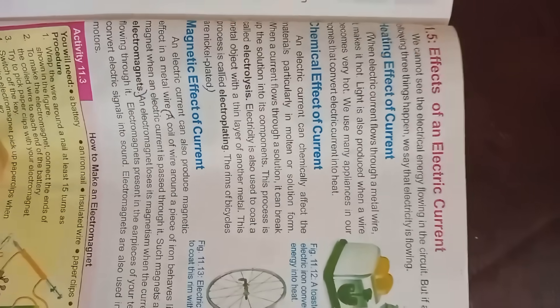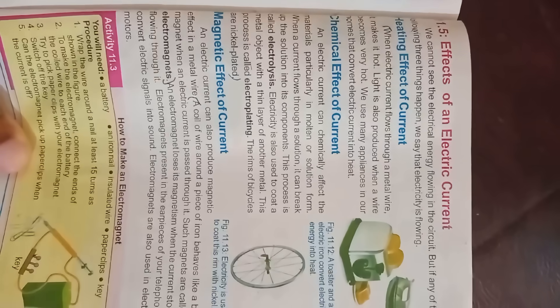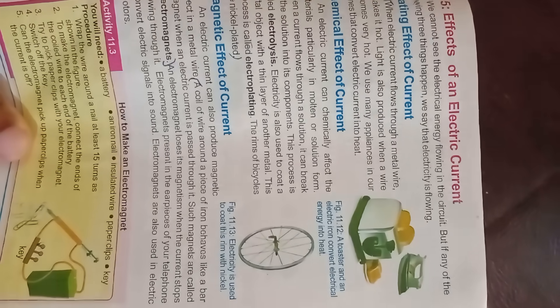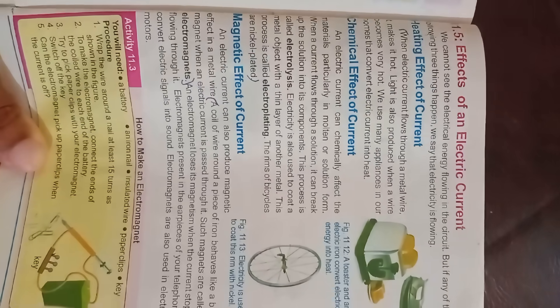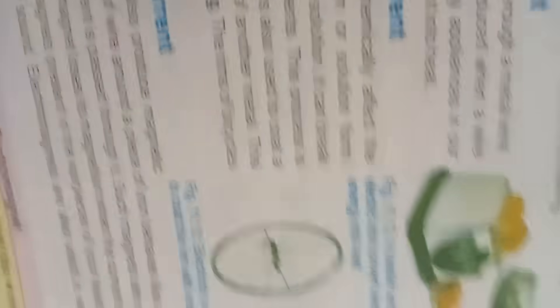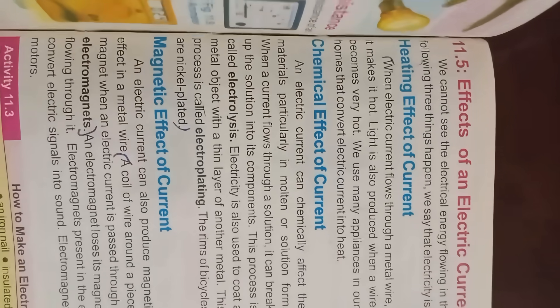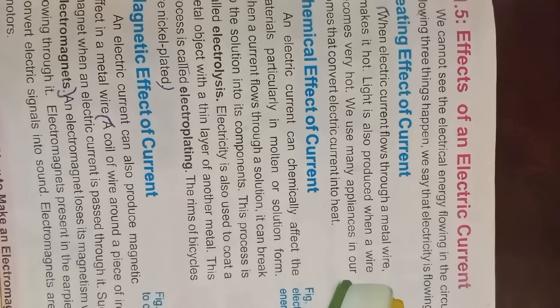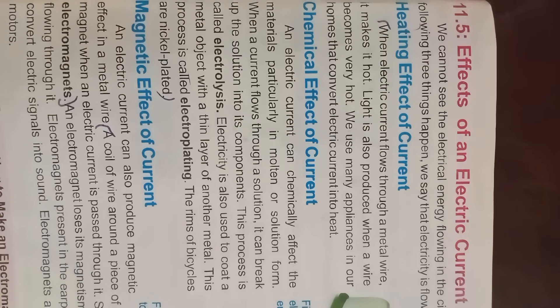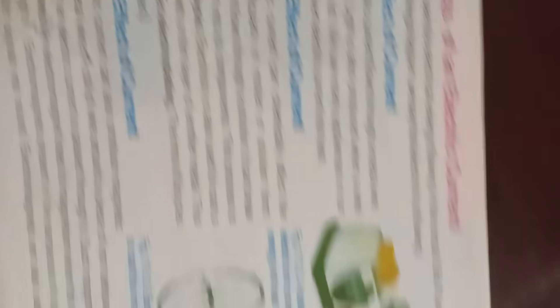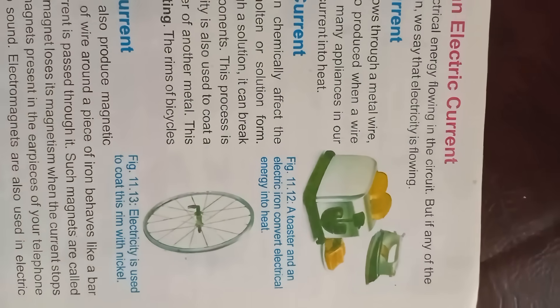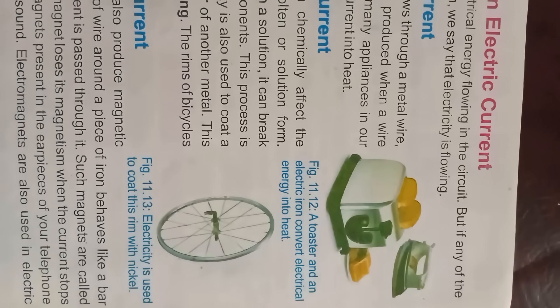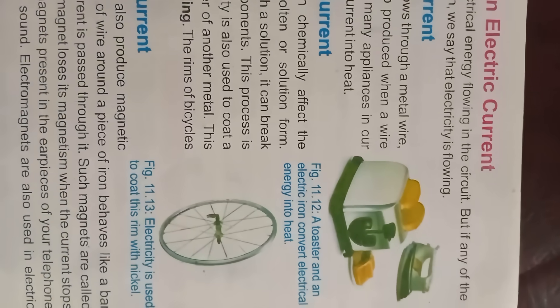Effects of electric current: we cannot see electrical energy flowing in a circuit, but if any of the following three things happen, we say electricity is flowing. Heating effect: when electric current flows through a metal wire, it may get hot and produce light. We use many appliances that convert electrical energy into heat — for example, a toaster and an electric iron.